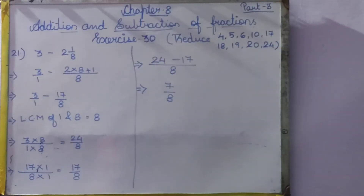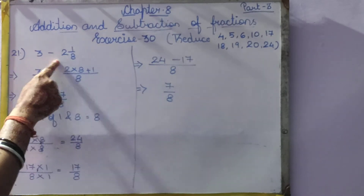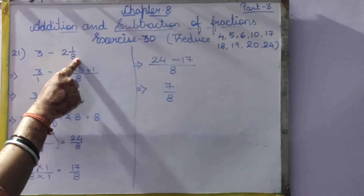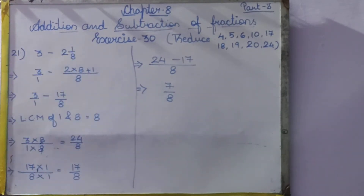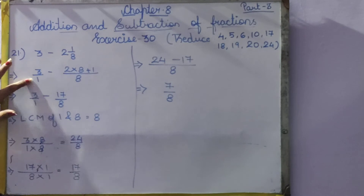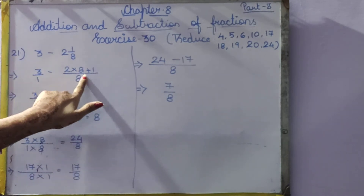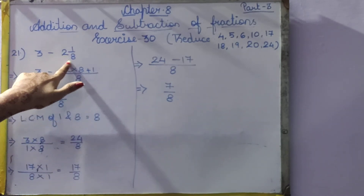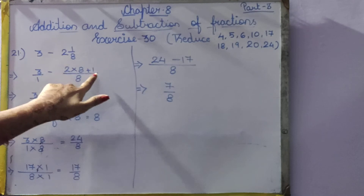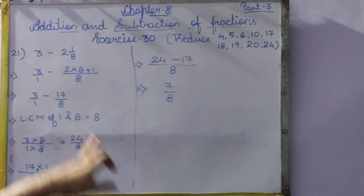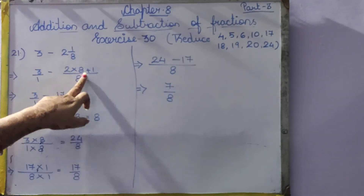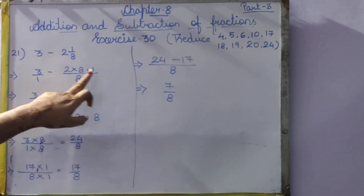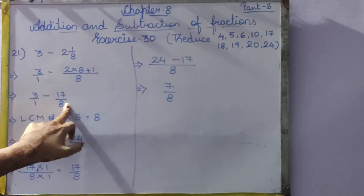Now question number 21: 3 minus 2 and 1 by 8. See, there is nothing written under the 3, so we write 1 as its denominator. Here 2 and 1 by 8: 8 into 2 plus 1. So 8 2's are 16, plus 1 will be 17 by 8.